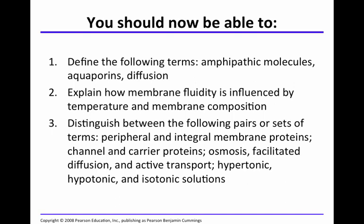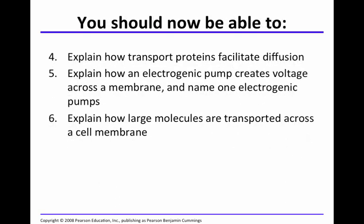You should be able to distinguish simple diffusion and hypertonic, hypotonic, and isotonic solutions. You should be able to discuss osmosis and the movement of water in plant cells as well as in animal cells. You should also be able to explain how transport proteins facilitate diffusion, how electrogenic pumps create voltage across a membrane, name at least one type of electrogenic pump, and explain how large molecules are transported across a cell membrane.